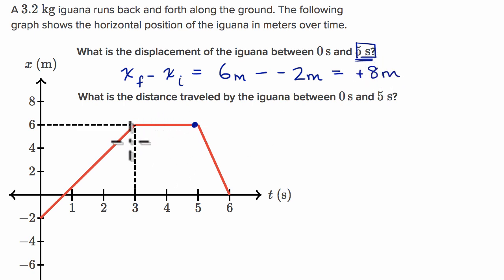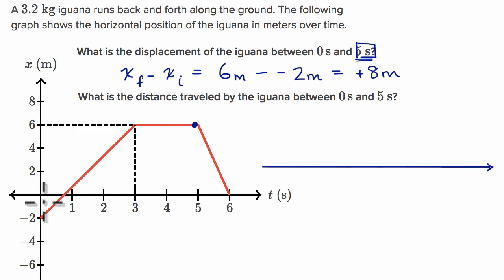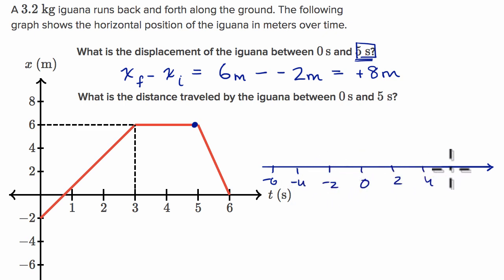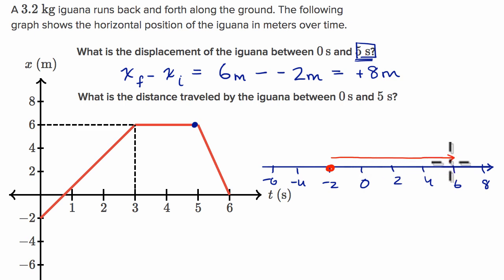One way to think about it is that net, this iguana shifts eight meters in the positive direction — eight meters to the right. We could draw a number line: negative six, negative four, negative two, zero, two, four, six, eight. The iguana is starting at negative two, and then over the next three seconds, it goes to positive six — it shifts to the right by eight. Six minus negative two is eight.